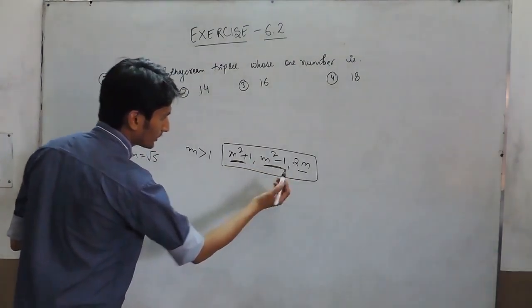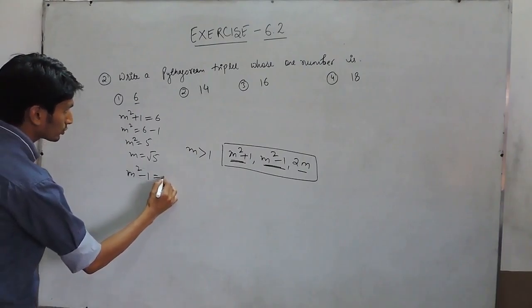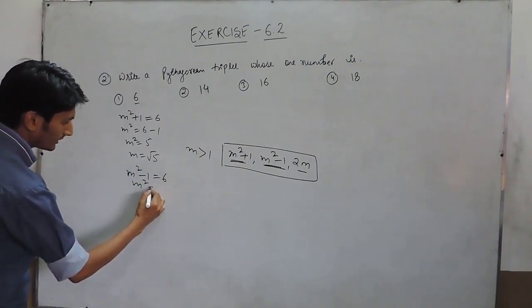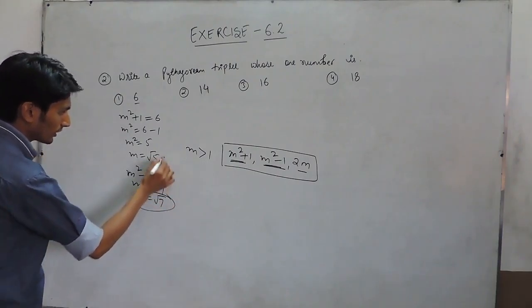We can again put 6 as m² - 1, so m² - 1 = 6, so m² is 7, so m is √7. Again this is not a perfect number.